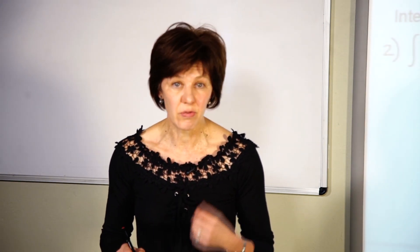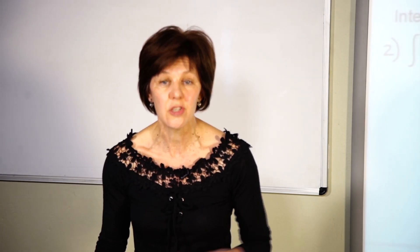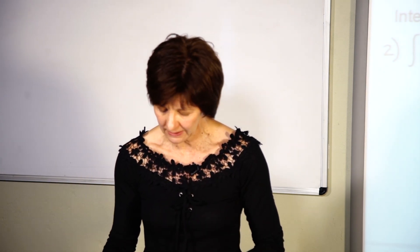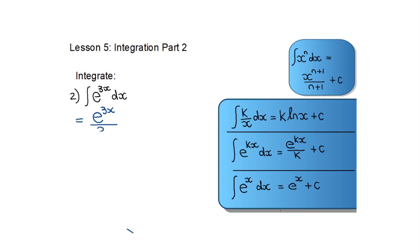Another rule you must be able to use is how to integrate e to the power kx and e to the power x. The integral of e to the power kx is e to the power kx divided by k plus the constant, and e to the power x integrated gives the same thing, e to the power x again. So for the example of integrating e to the power 3x, I use this rule where k is replaced by 3, giving e to the power 3x divided by 3, plus the constant.